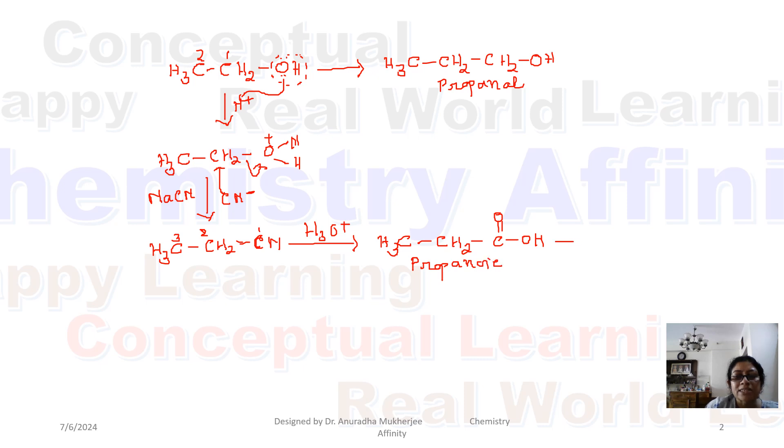Now propanoic acid, when we treat with lithium aluminum hydride, a strong reducing agent, this carboxylic acid group is reduced to CH2OH. That means we will be getting CH3-CH2-CH2OH, so we are getting propanol.